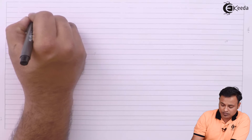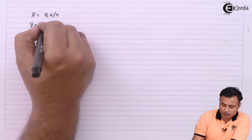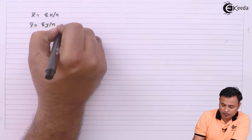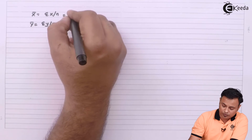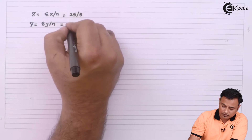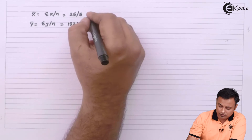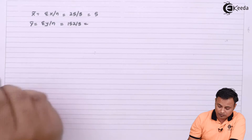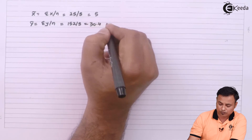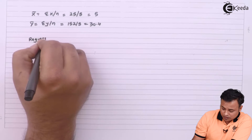Now I calculate x̄ and ȳ. The formula is x̄ = Σx ÷ n and ȳ = Σy ÷ n. Σx = 25 and Σy = 152, with n = 5. So x̄ = 25 ÷ 5 = 5, and ȳ = 152 ÷ 5 = 30.4.